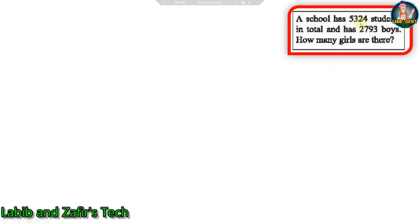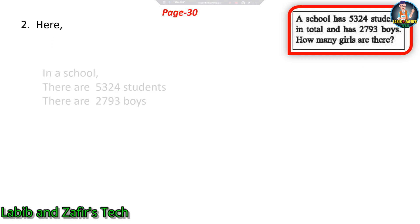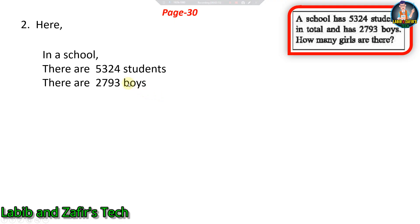Now let's go to our next word problem. A school has five thousand three hundred twenty-four students in total and has two thousand seven hundred ninety-three boys. How many girls are there? This is a bit different from the first one — the total number of students and the number of boys are given, so we have to find the number of girls.